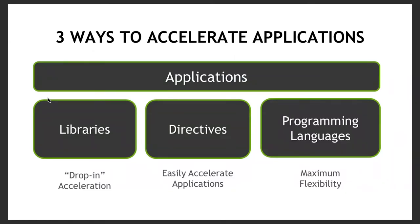There are generally three ways to think about accelerating your applications to take advantage of GPUs on accelerated nodes. I would put these into three buckets: the use of libraries, the use of directive-based approaches, and the use of lower-level programming languages. Going from left to right, you go from descending ease of use — libraries are the easiest — to potentially increasing flexibility and power.